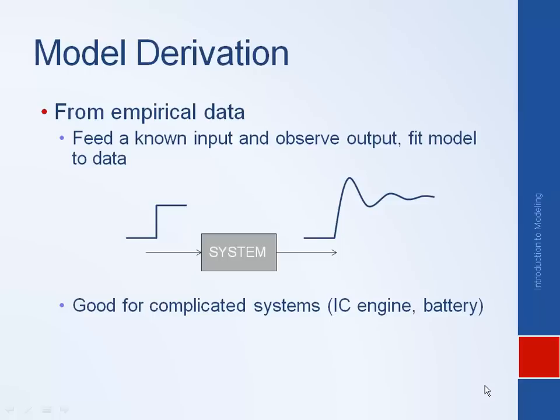This approach is good for complicated systems in that you don't really have to understand the system. You don't have to derive the model using your physical knowledge of the system. You just try and match the input to the output. Examples where this approach might be useful would be for an IC engine or for a battery. You can imagine the complexity that would go into trying to model the combustion process, the chemical reaction that's happening in each stage of the engine cycle, or similarly the electrochemistry, the chemical reaction that's happening in a battery.